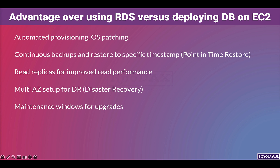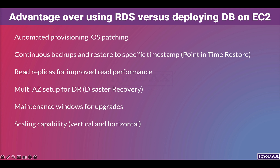RDS also provides maintenance window features for database upgrades. For example, you can schedule maintenance to occur once a week during a specific time period that lasts between 30 minutes and up to 23 hours and 30 minutes. It provides both vertical and horizontal scaling capabilities — you can launch RDS on higher-end machines or run additional DB instances to manage scalability.